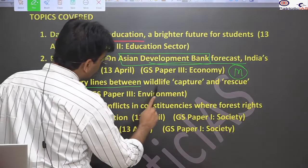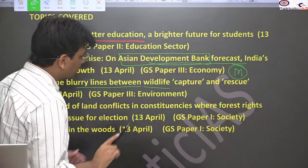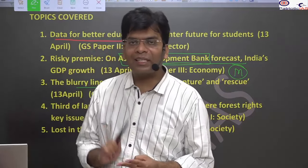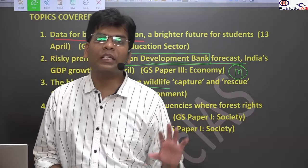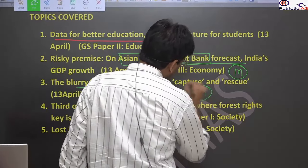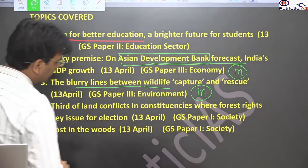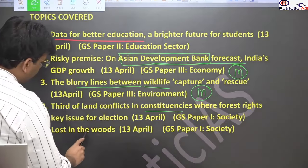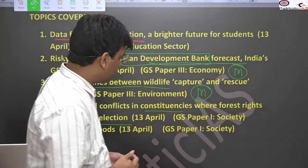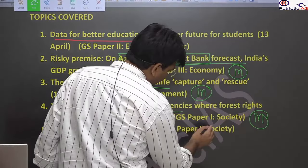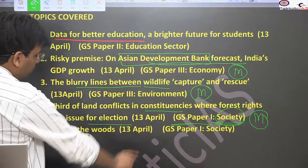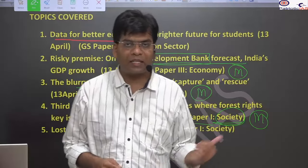We will cover 'The Blurry Lines Between Wildlife Capture and Rescue Operations.' This talks about the environment, human-animal conflict, and how in the name of rescue operations we simply capture and relocate animals, which is not good for conservation. We will analyze this in detail for mains. Then we'll study the 'One-Third Land Conflict in Constituencies Where Forest Rights Are a Key Issue for the Election,' covering the Forest Rights Act and why there is an issue — again relevant for mains GS Paper 1 society section, covering tribal people and tribal society.